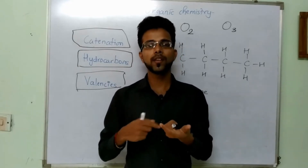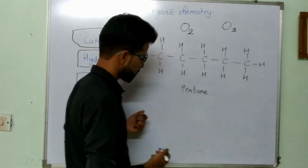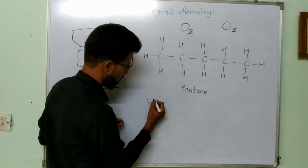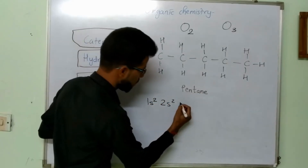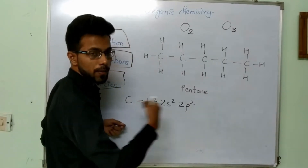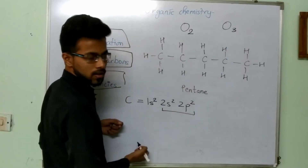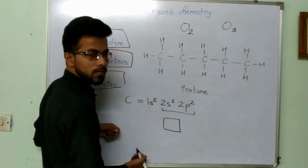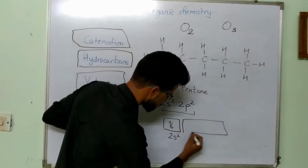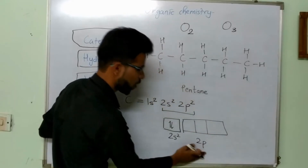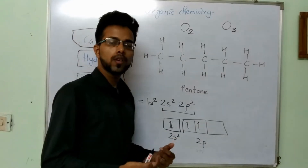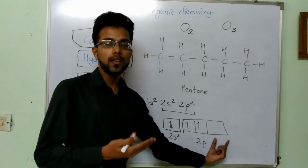Since we are talking about organic chemistry, let's see the example of carbon. The atomic number of carbon is 6. Its electronic configuration is 1s2, 2s2 and 2p2. According to the Aufbau principle, we place electrons in these orbitals: 2s2 has two electrons, and then in the 2p orbital we have two electrons. So the third orbital is incomplete.